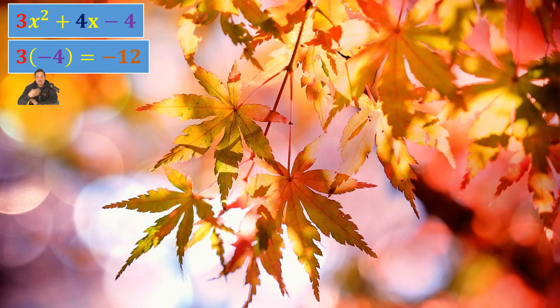So when I do that here, I'll have 3 times -4, which is -12. That -12 is useful because you can use that to rewrite the 4x that you see in the middle.